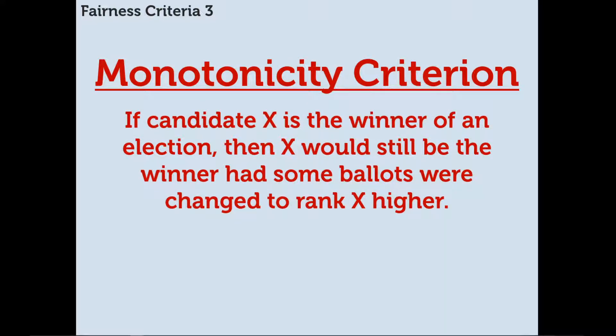The third one is the monotonicity criterion, which states that if candidate X is the winner of an election, then X would still be the winner had some ballots been changed to rank X higher. This says that if X is determined the winner and ballots are changed to rate X higher using the same voting method, X should still be the winner. That's pretty reasonable — if you rank somebody higher they should still win if they won beforehand.